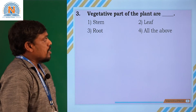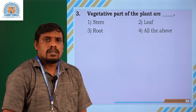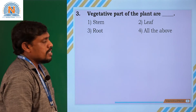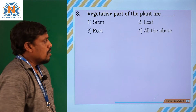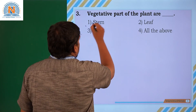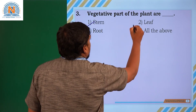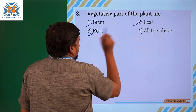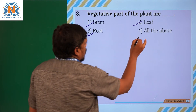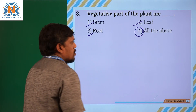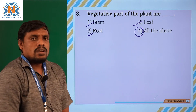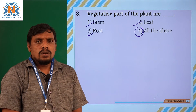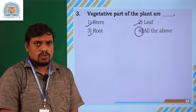Third question: what are the vegetative parts of a plant? They are stem, leaf, and root. These three parts are considered vegetative parts. Hence, option 4 is suitable for this question.